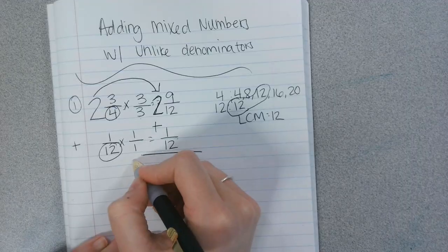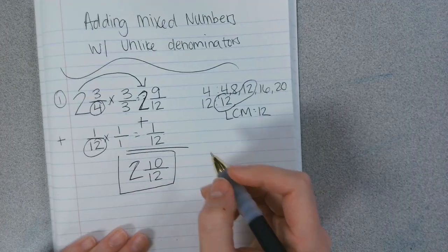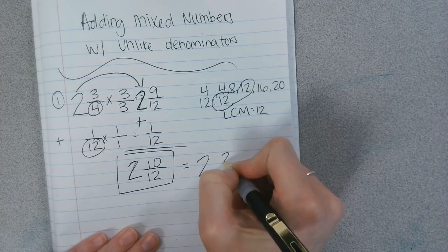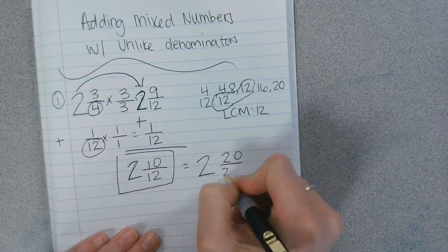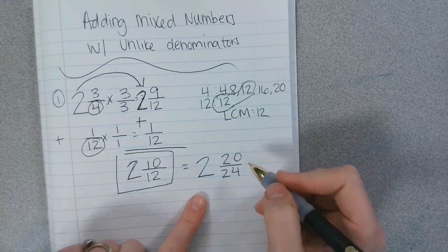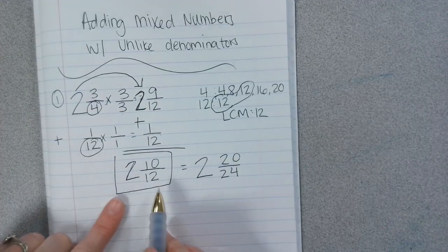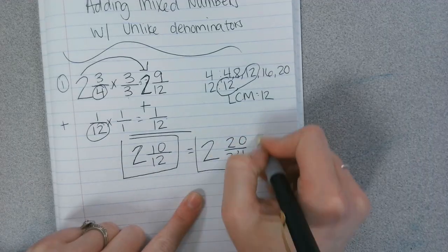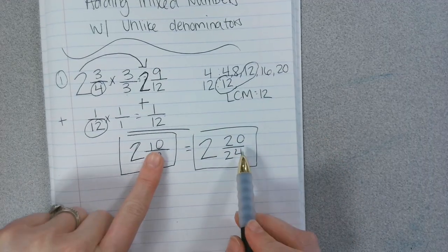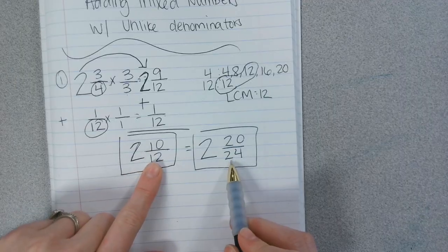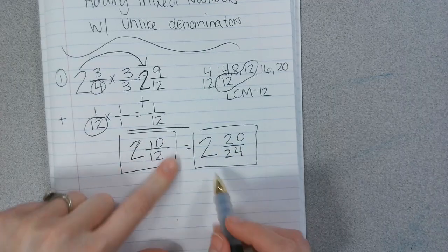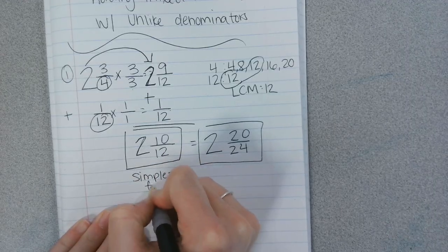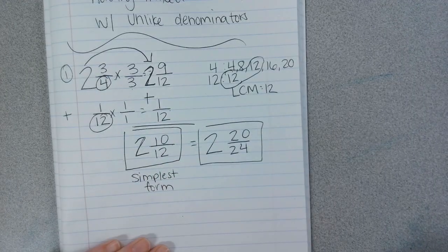So the answer would be 2 and 10 twelfths. If you wrote down 2 and 20 over 24, that's also correct. It's an equivalent fraction. But this fraction would be written in simplest form. This is also correct because they're equivalent. 10 times 2 is 20, 12 times 2 is 24. So they're equivalent fractions, but this one is written in simplest form.